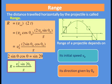What is range? The distance travelled horizontally by the projectile is called range. R = Vox × 2t, where Vox = V0 cos θ₀ and t = V0 sin θ₀ / g. So R = V0 cos θ₀ × 2·V0 sin θ₀ / g.